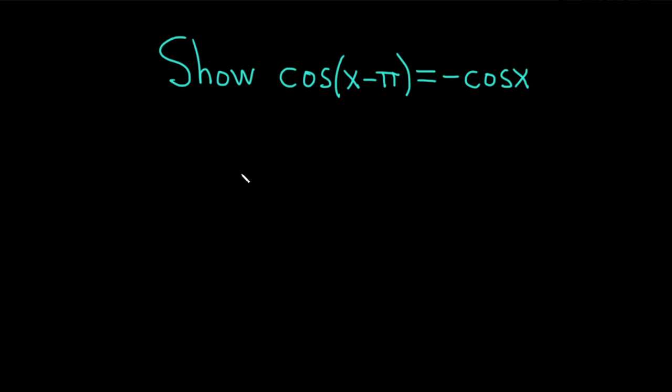Hello, in this video we're going to show that the cosine of x minus pi is equal to minus cosine x. Let's go ahead and work through it.